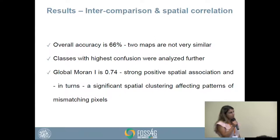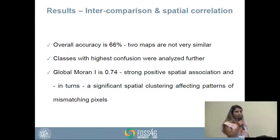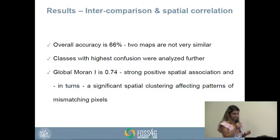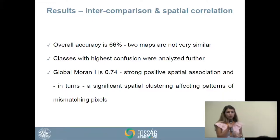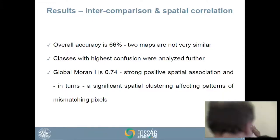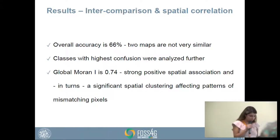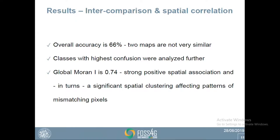Overall accuracy was 66%, meaning the two maps are not very similar. The classes with the highest confusion — Wetland and Shrubland — are analyzed further. Global Moran's I was 0.74, indicating strong spatial correlation of the disagreement, and we also identified significant spatial clustering in the mismatching pixels.